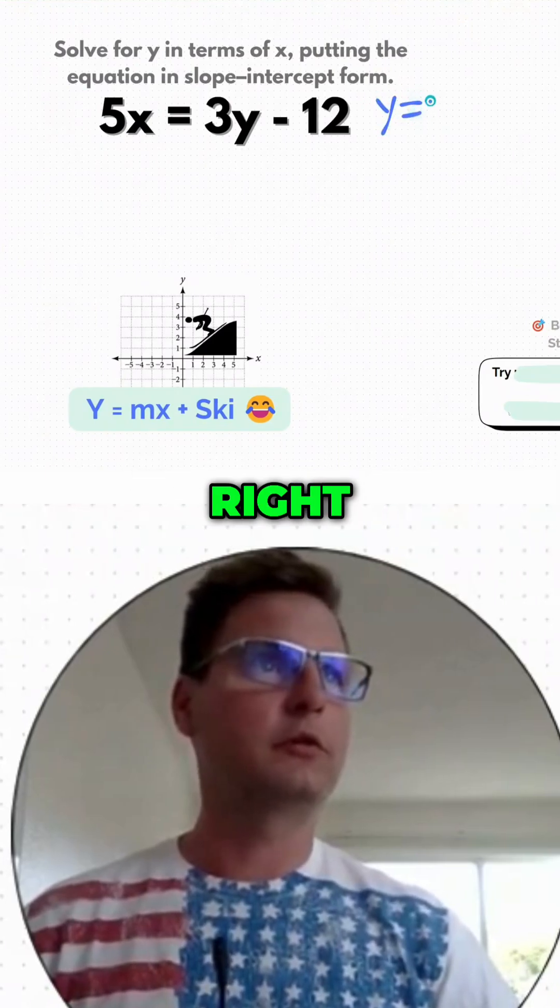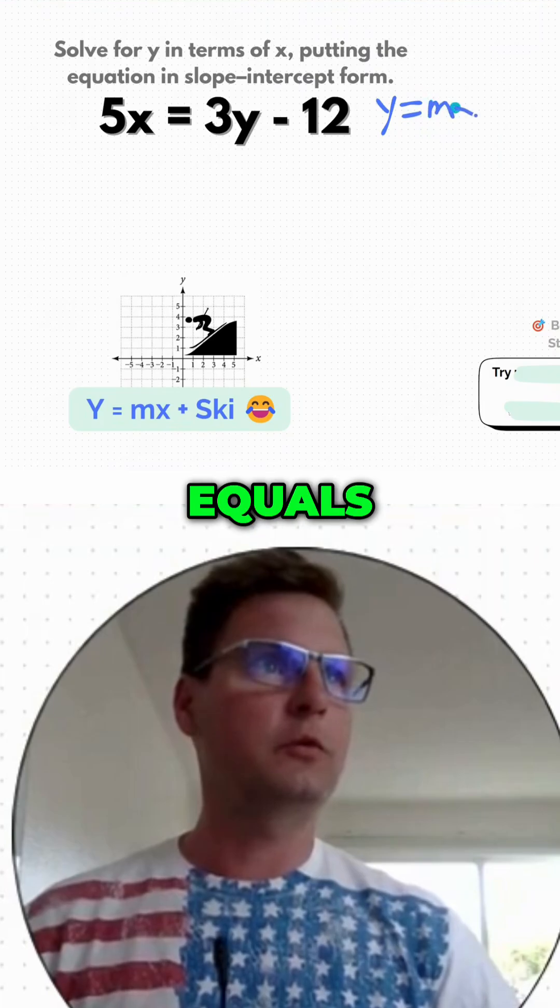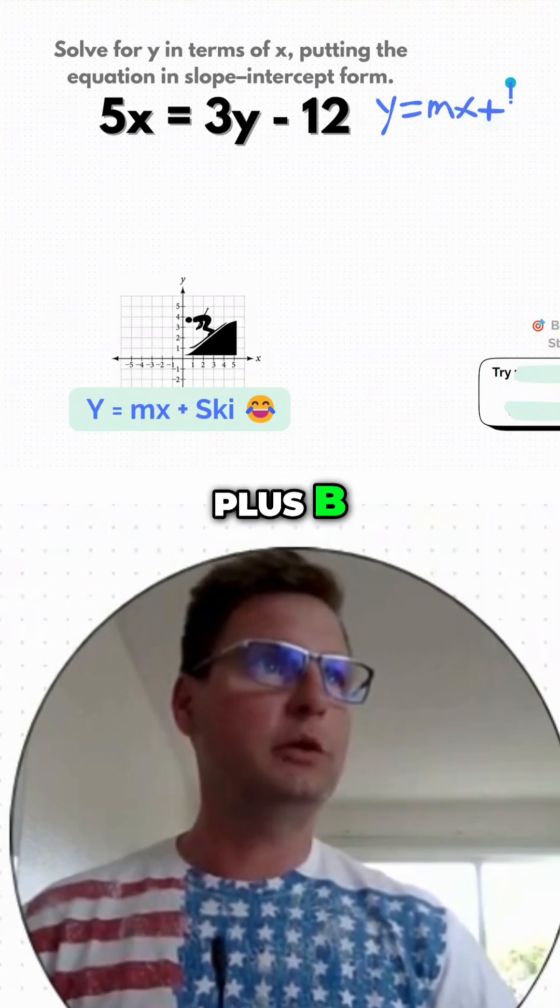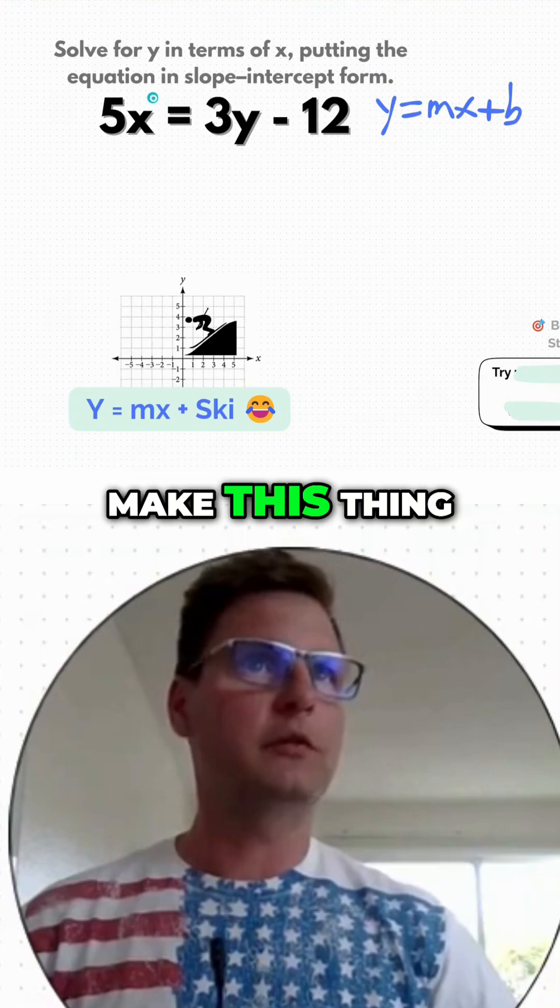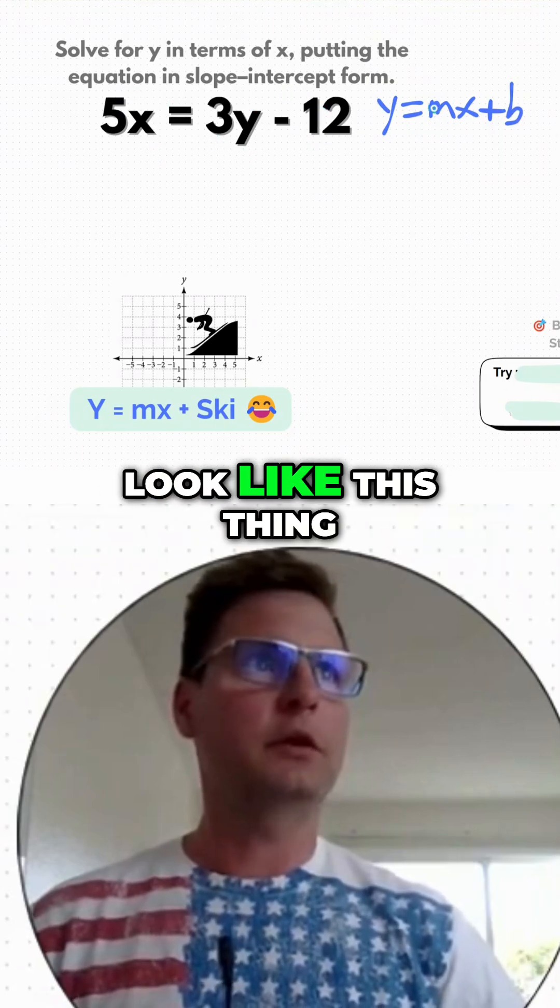What is slope-intercept form? This one right here: y equals mx plus b. So we want to make this thing look like this thing.